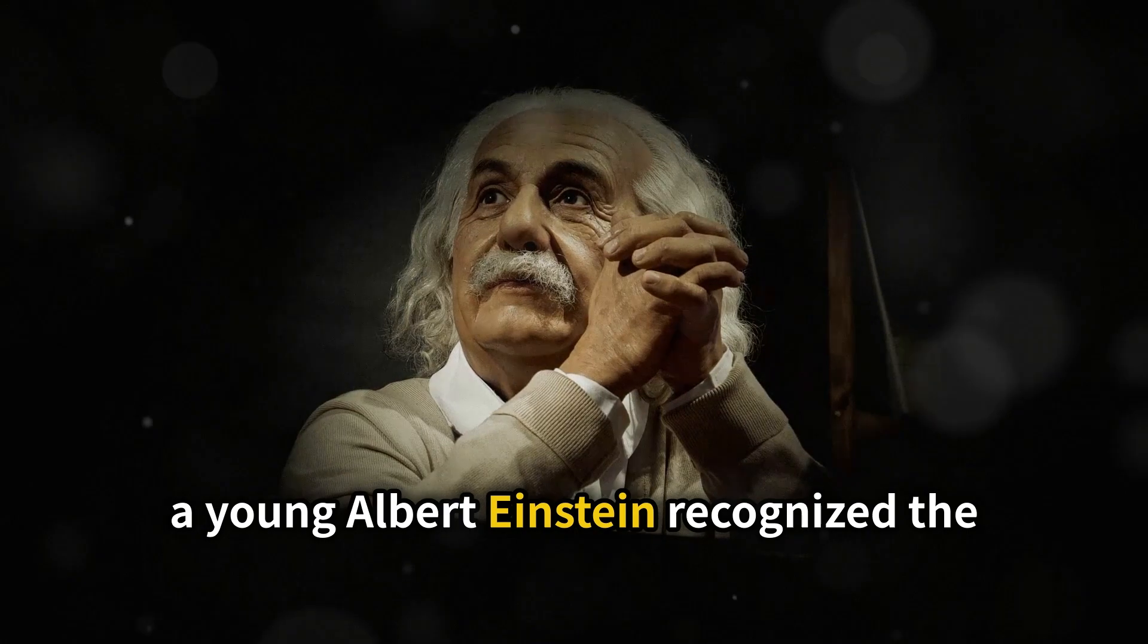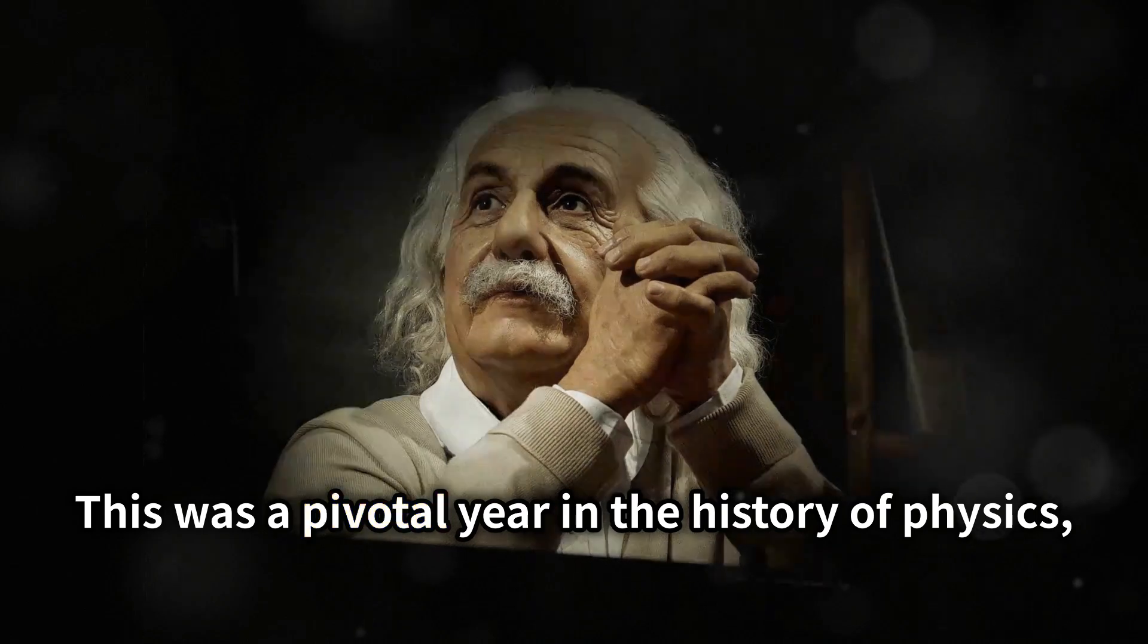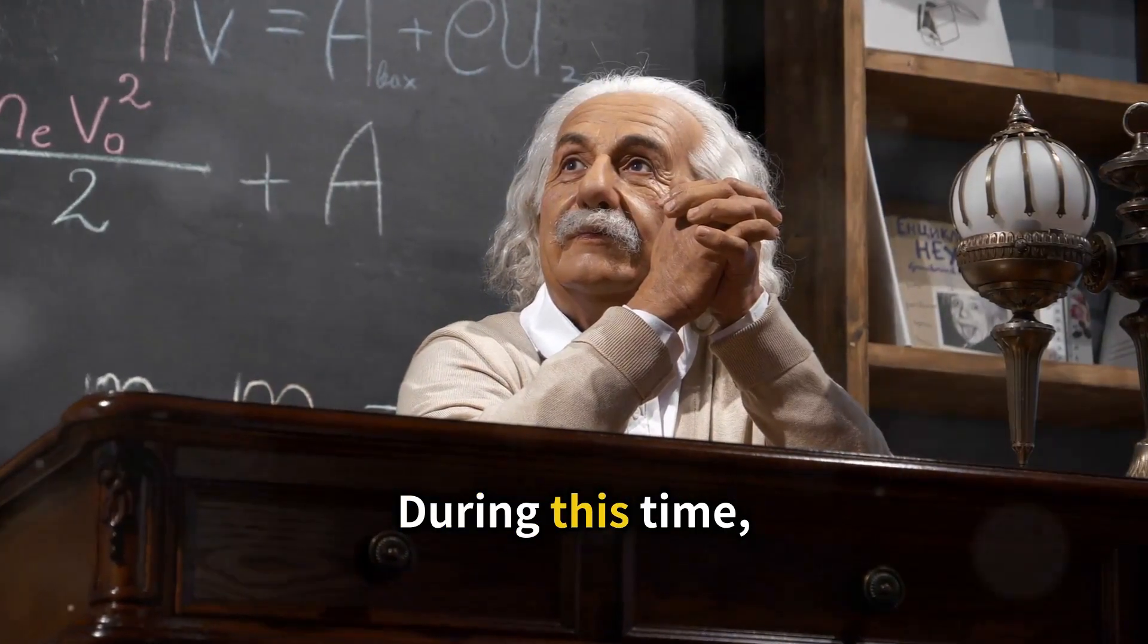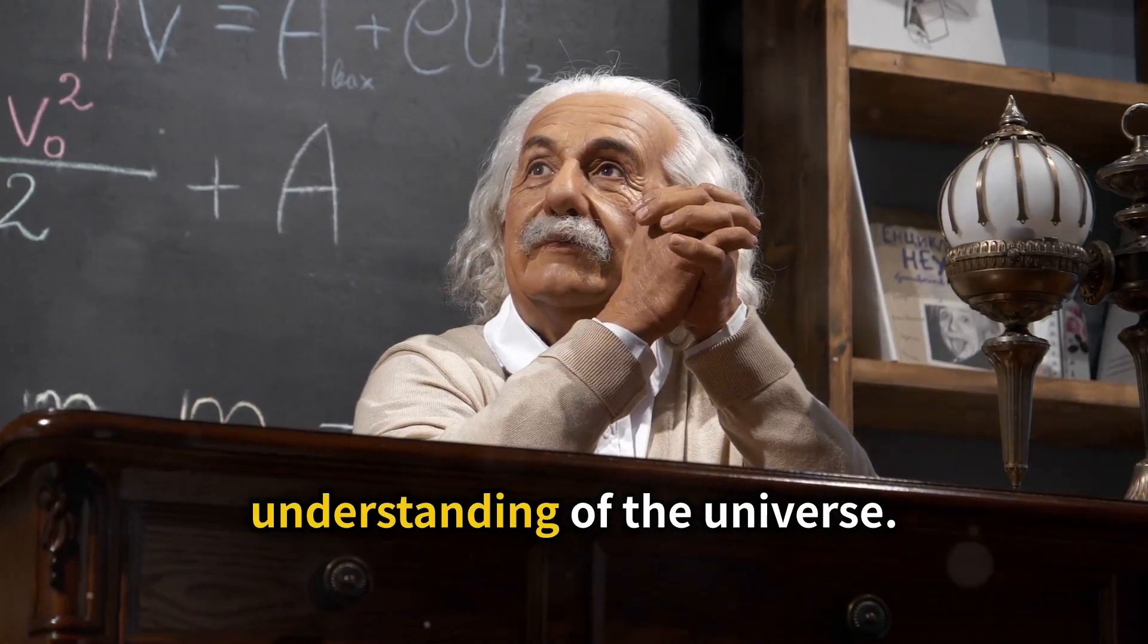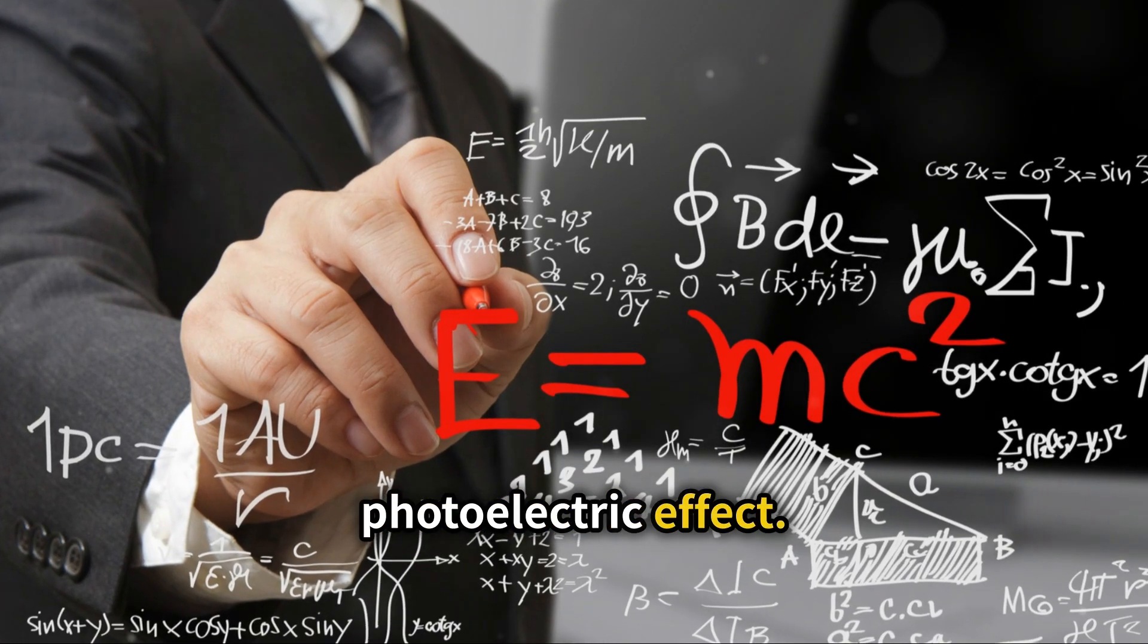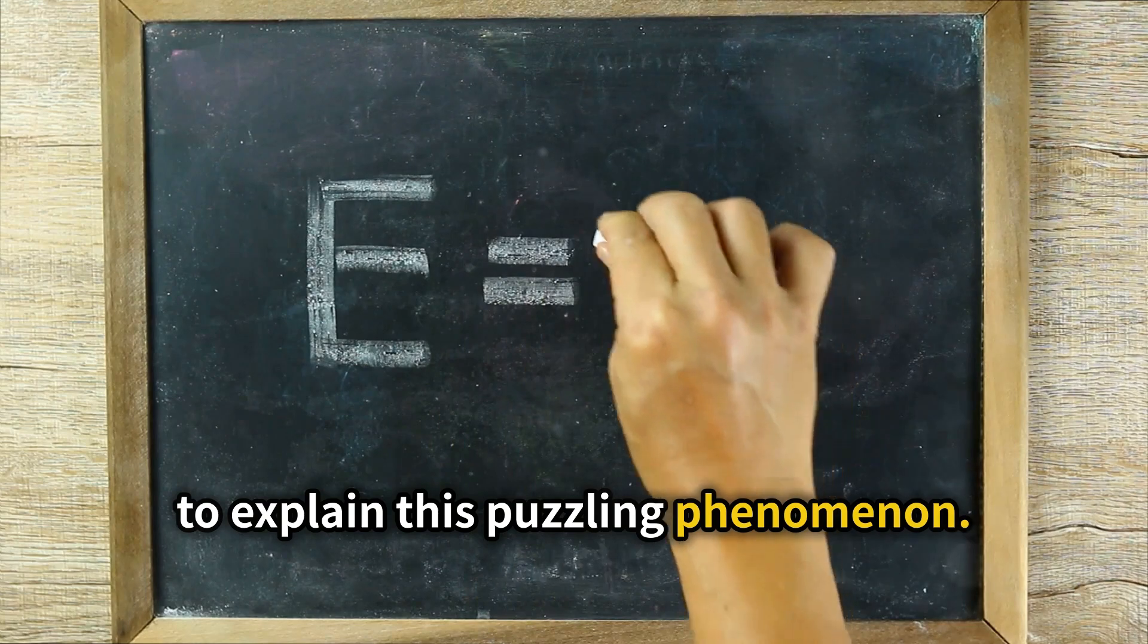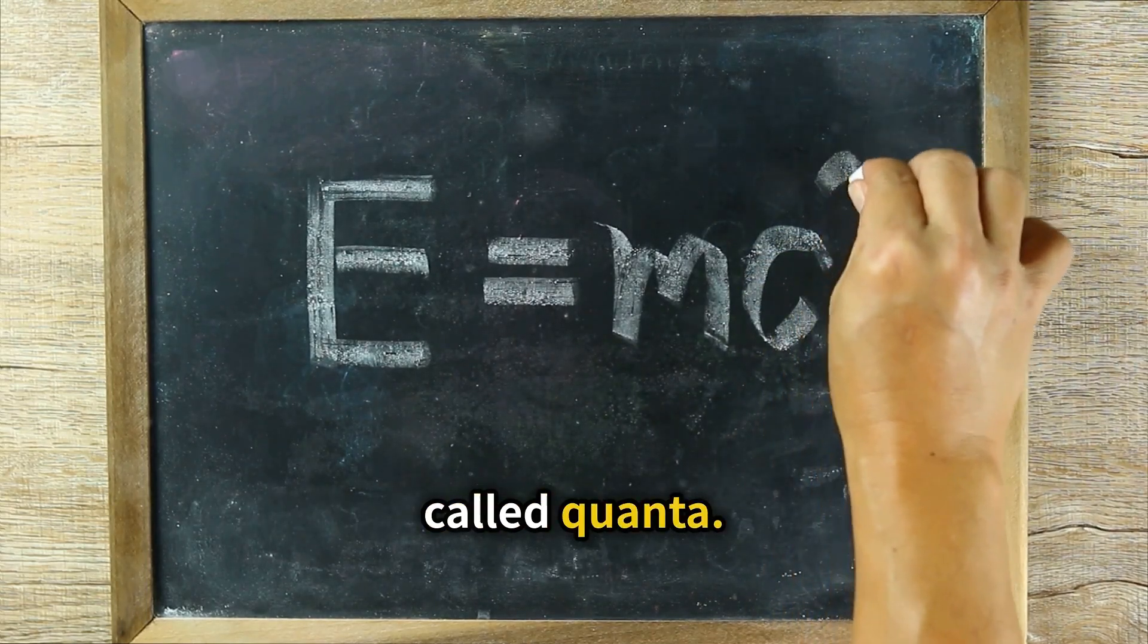In 1905, a young Albert Einstein recognized the profound implications of Planck's work. This was a pivotal year in the history of physics, often referred to as Einstein's Annus Mirabilis, or Miracle Year. During this time, Einstein published four groundbreaking papers that would forever change our understanding of the universe. One of these papers focused on the photoelectric effect. He used the idea of quantized energy introduced by Max Planck to explain this puzzling phenomenon. Planck had proposed that energy is quantized, meaning it comes in discrete packets called quanta.